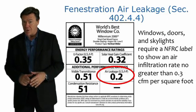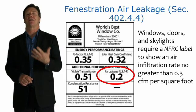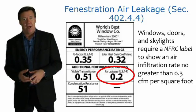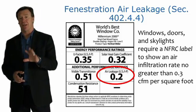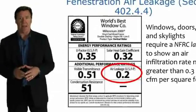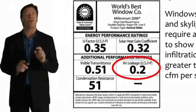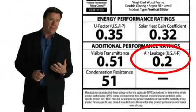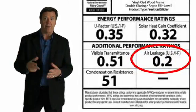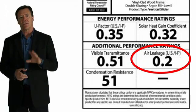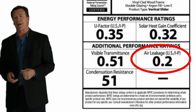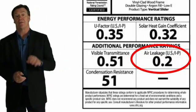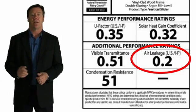Regarding the NFRC label on fenestration, in addition to heat loss and heat gain, another important component is air leakage. This window, for example, has an air leakage of 0.2 CFM per square foot, and the code requirement is no more than 0.3 CFM per square foot, so this window qualifies. This is something to look for when selecting windows and during building inspections.